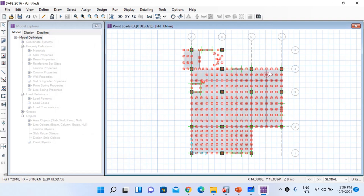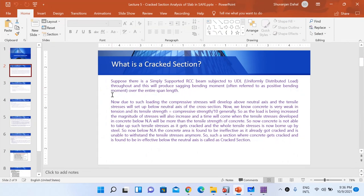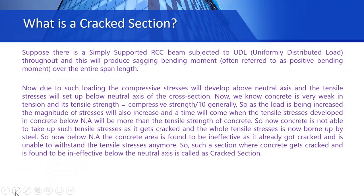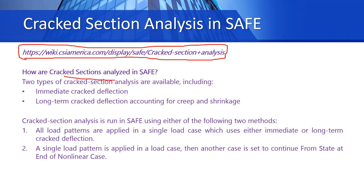I have some short presentation slides about how cracked section analysis is performed in SAFE. These slides are prepared from information on the CSI America website, the link is provided. There are two types of cracked section analysis available: one is immediate cracked deflection and another is long-term cracked deflection accounting for creep and shrinkage. I will make this presentation available as a PDF on our Facebook page, Inquisitive Engineer.